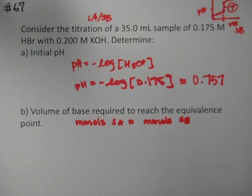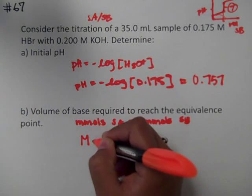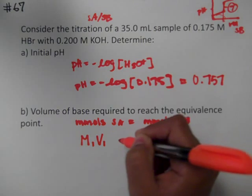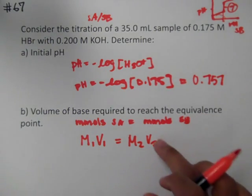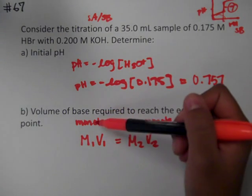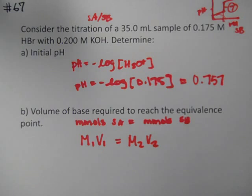So remember we have a fancy formula that does this calculation for us, and it's always going to be M1V1—molarity 1 volume 1—will equal M2V2, and we're going to solve for V2 because remember moles equals molarity times volume. So we've set mole to mole equal to each other.